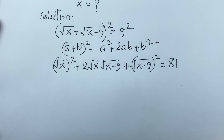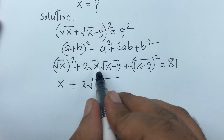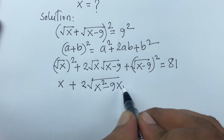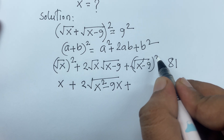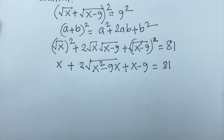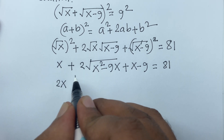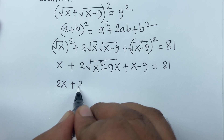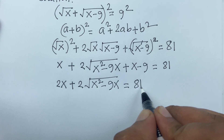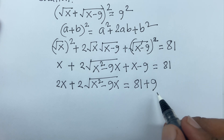The square roots cancel, so we find x plus 2 times square root of x squared minus 9x plus x minus 9 is equal to 81. Combining the x terms gives 2x plus 2 times square root of x squared minus 9x is equal to 81. Moving minus 9 to the right side makes it positive, so we get 2x plus 2 times square root of x squared minus 9x is equal to 90.